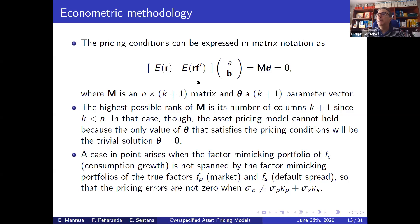Assuming I have enough assets to estimate a and b, the maximum rank of the matrix M is going to be k plus one. But if the rank of this matrix is k plus one, then the only solution for a and b will be zero, which effectively means the model will be rejected because we cannot find any values for the parameters other than zero that will satisfy the moment conditions.